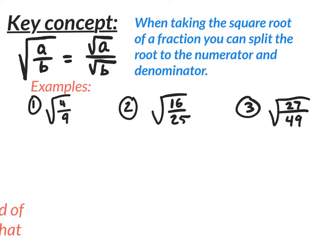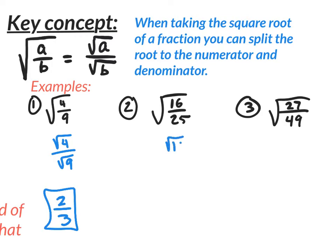Example number one: the square root of 4 over 9. I'm going to rewrite that by splitting the root and saying the square root of 4 over the square root of 9. The square root of 4 is 2, and the square root of 9 is 3, so two-thirds is my answer. How about the next one? Split the root: square root of 16 over square root of 25 — that's 4 over 5. Four-fifths is my answer.